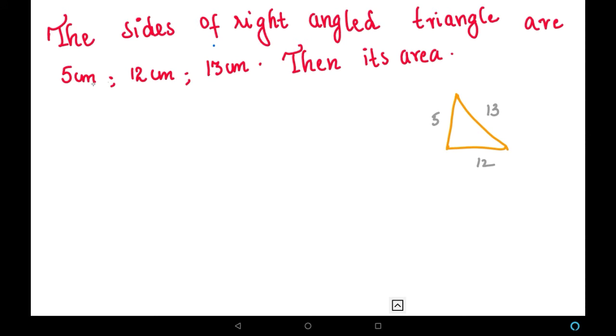They have given the sides of the right angle triangle and asked us to find the area. The formula for finding the area of a right angled triangle is: area equals half times base times height.